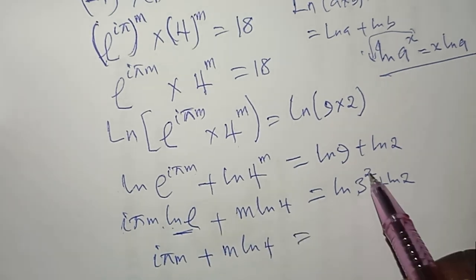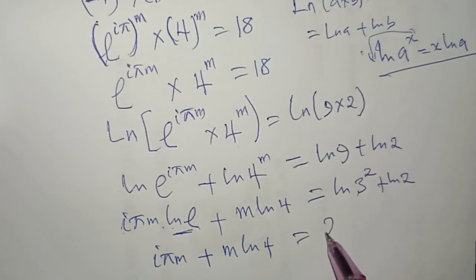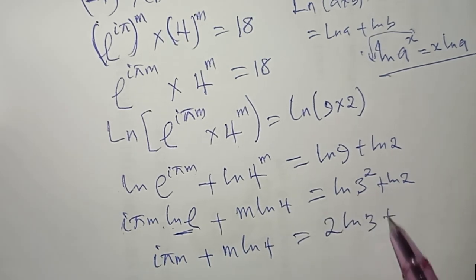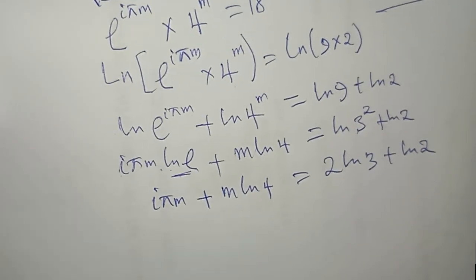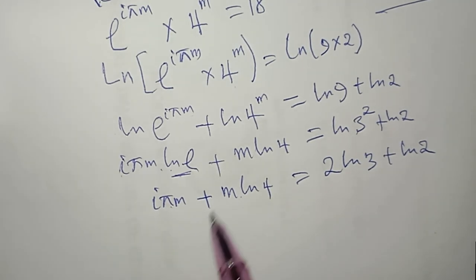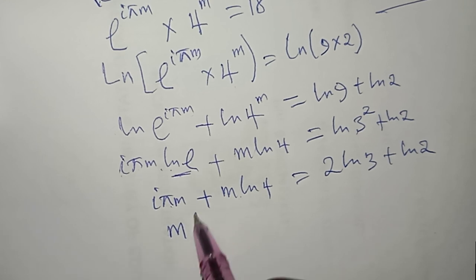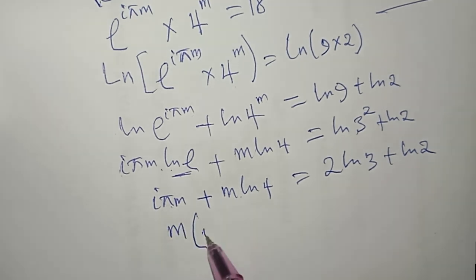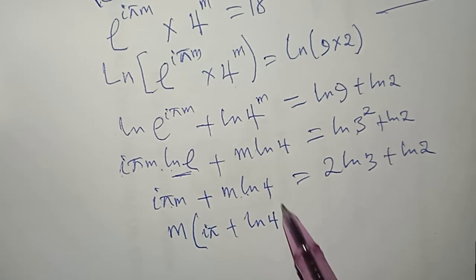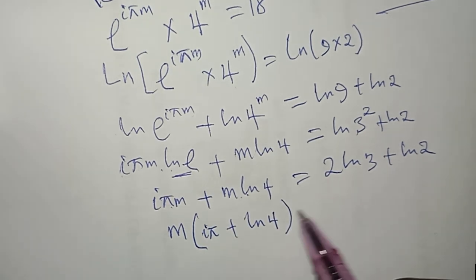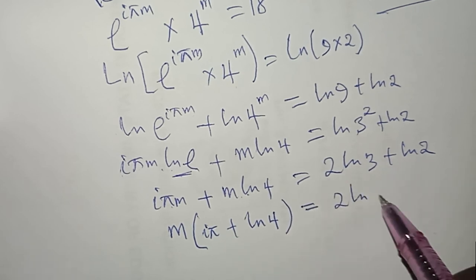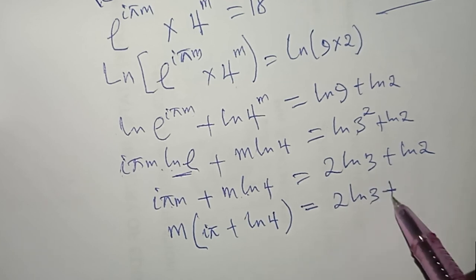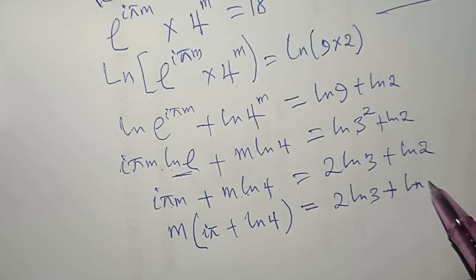I can see that m is common on the left side, so I factorize: m·(iπ + ln(4)) = 2·ln(3) + ln(2).